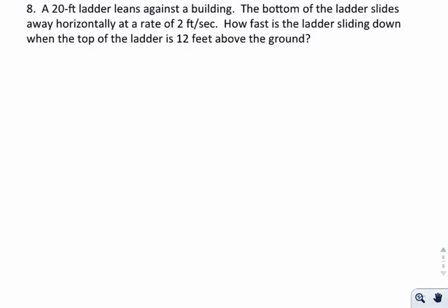In number eight, a 20-foot ladder leans against a building. The bottom of the ladder slides away horizontally at a rate of 2 feet per second. So how fast is the ladder sliding down when the top of the ladder is 12 feet above the ground?